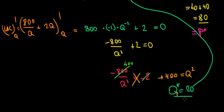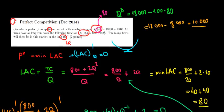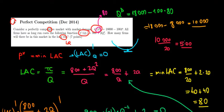We calculated that each company produces 20 units in the long run. Since there are 10,000 units demanded in the entire market, 10,000 divided by 20 units per company gives us 500 firms in the long run. That's what we were looking for — 500 firms. Hope this makes sense and we are done.